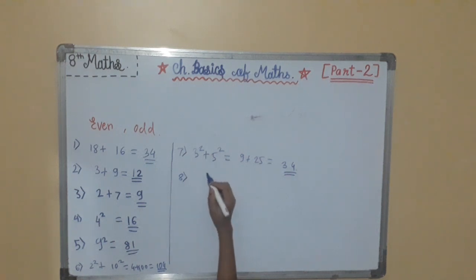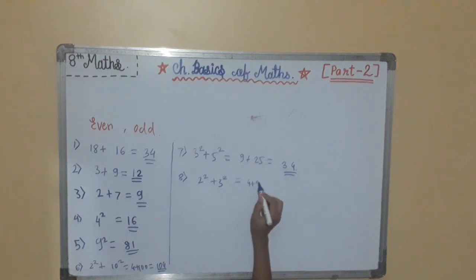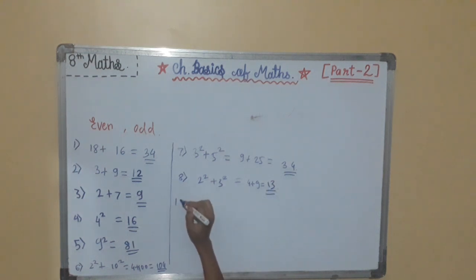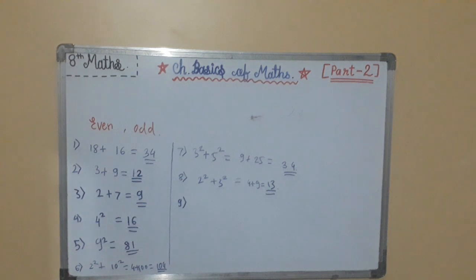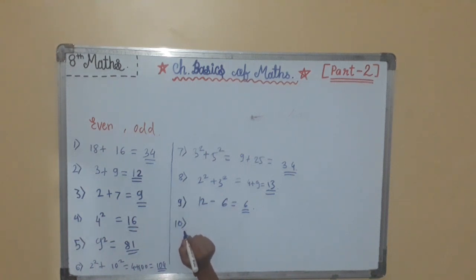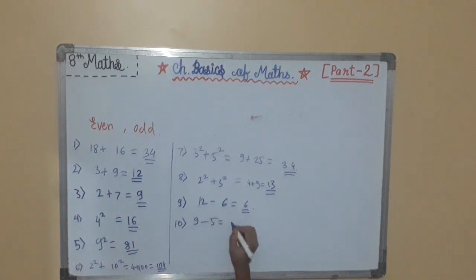Continuing with property 8: 2 raised to 2 plus 3 raised to 2 equals 4 plus 9, that is 13, which is an odd number. Property 9: the difference of two even numbers is even. For example, 12 minus 6 equals 6, which is also an even number. Property 10: the difference of two odd numbers is even. For example, 9 minus 5 equals 4, which is even.